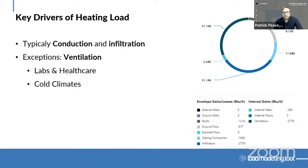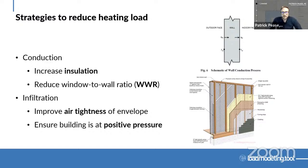Key drivers for heating load will typically be conduction or infiltration. The same exception applies for labs and healthcare — they have a lot more outdoor air which often drives the heating loads for those building types. In cold climates as well, even a small amount of outdoor air is really going to drive the load. For conduction, the primary mechanism is heat transfer through a wall surface, and ways to counteract that include increasing insulation to reduce heat transfer. We can also reduce the window-to-wall ratio — fewer windows — though that needs to be tied with daylight considerations. Windows are a significant source of load in projects.